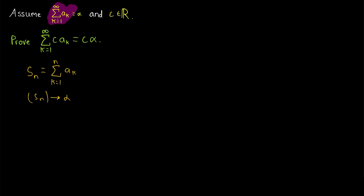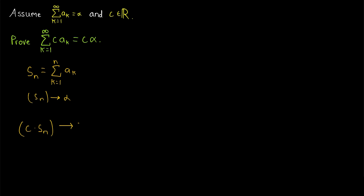That's what it means for the series to converge to alpha. Then, if we consider the sequence c times Sn, by our previously proven limit laws for sequences, we know that this sequence must converge to c times alpha. We're trying to prove that multiplying every term in the series by c gives a limit of c times alpha, and we've already proven this sort of result for sequences. I'll leave a link in the description to my lesson proving that limit law for sequences.